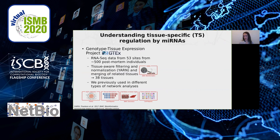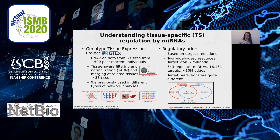Let's apply PUMA to real data to understand tissue-specific regulation by microRNAs. We used data from the Genotype-Tissue Expression Project, or GTEx, because it's a very rich dataset. It has RNA-seq data from about 53 different tissue sites for about 500 post-mortem individuals and over 10,000 samples. We applied tissue-aware filtering with a method called YARN that merged several related tissues, ending up with 38 specific tissues. We had previously used these in different types of network analysis but had not yet looked into microRNA networks. To model microRNA networks, we integrated expression signals with regulatory priors based on target predictions, using two widely used resources: TargetScan and Miranda.